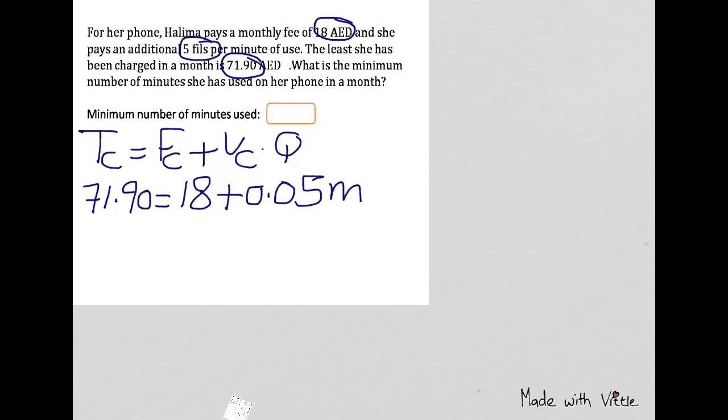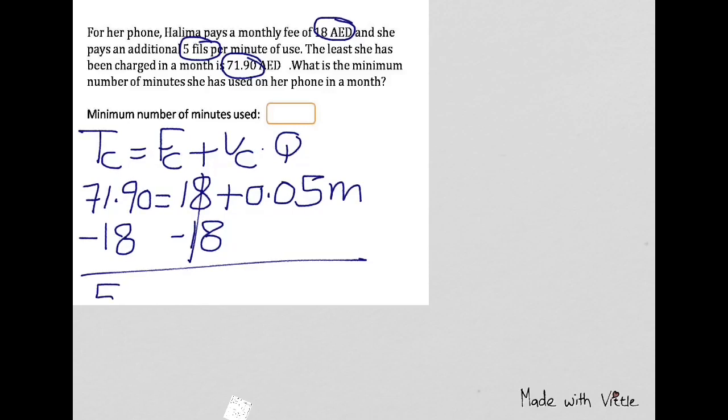Let's solve this equation for M. First step is subtract 18 from each side. 71.90 minus 18 is 53.9 equals 0.05 M.